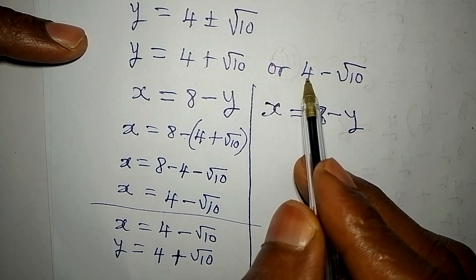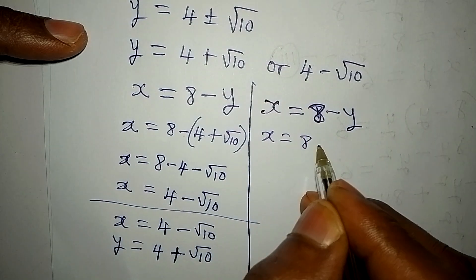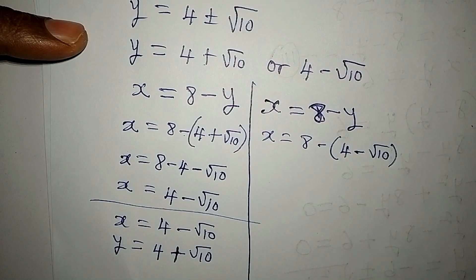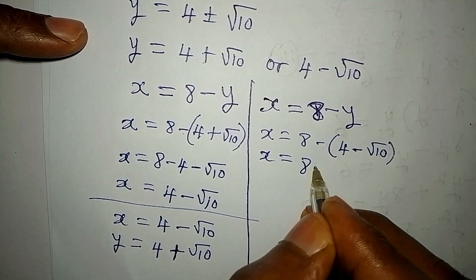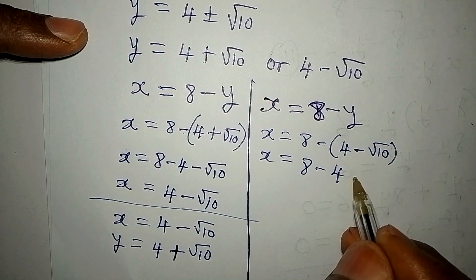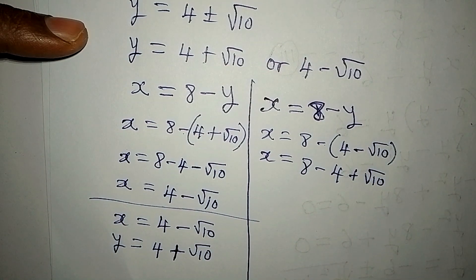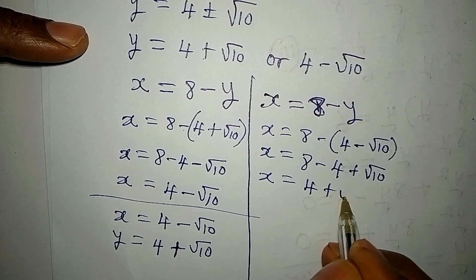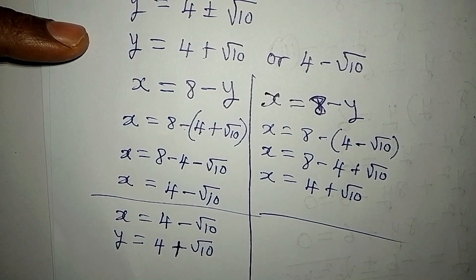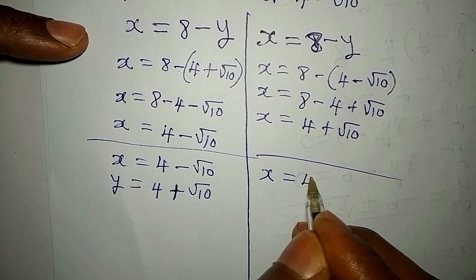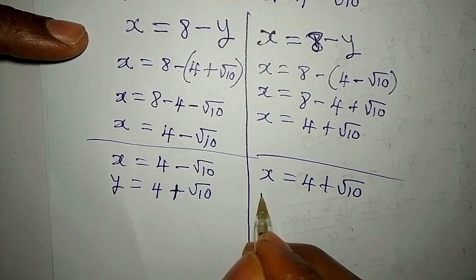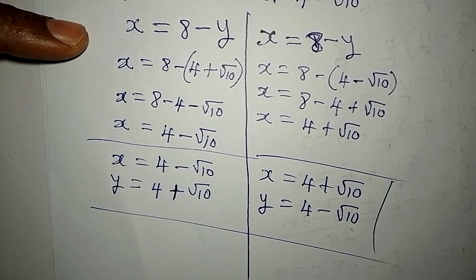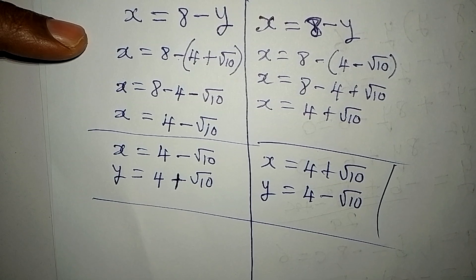Now using the second value, y equals four minus root ten: x equals eight minus open bracket four minus root ten, close bracket. This gives x equals eight minus four, and negative times negative root ten gives positive root ten. So x equals four plus root ten. Our two solution pairs are: x equals four plus root ten with y equals four minus root ten, and x equals four minus root ten with y equals four plus root ten. Thank you for watching — if you enjoyed this, please subscribe to my channel.